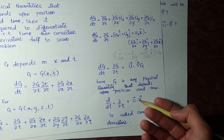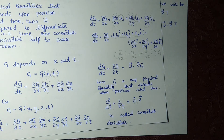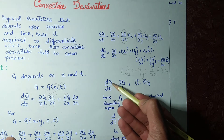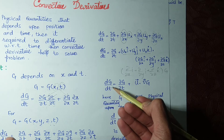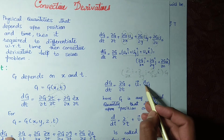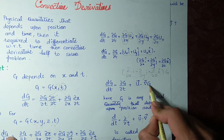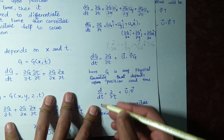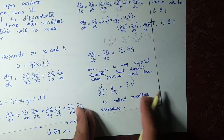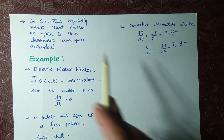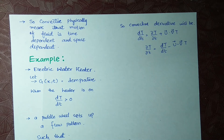Note that the dot product u·∇ is commutative. Physically, the convective derivative tells us that when a physical quantity changes with respect to time, there is also a change with respect to position — there is a relation between time and position. Physically, the convective derivative means the motion of a fluid is both time-dependent and space-dependent.